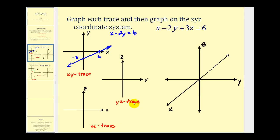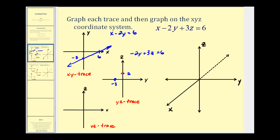To determine the yz trace, or where the plane intersects the yz plane, we'll set x equal to zero. That'll give us the line negative two y plus three z equals six. Notice how we have changed the orientation of the axes — this is now the y-axis, and this is now the z-axis. So if we set z equal to zero, y would have to be negative three, which matches the y intercept from the xy trace. Now if we set y equal to zero, z would have to be equal to two, so our z intercept is positive two. So the given plane intersects the yz plane along this line.